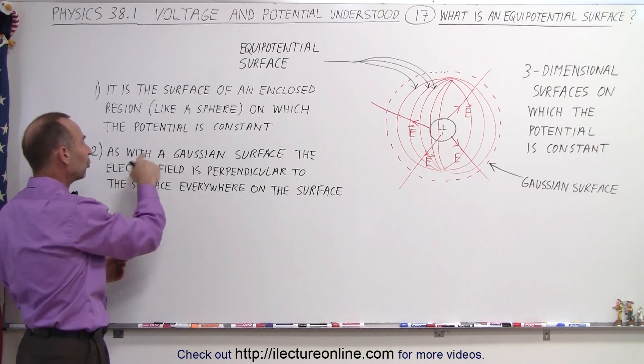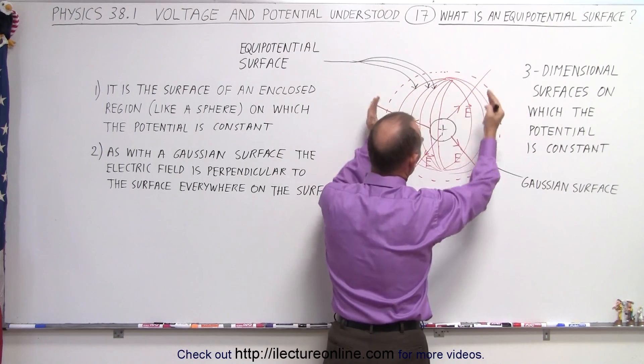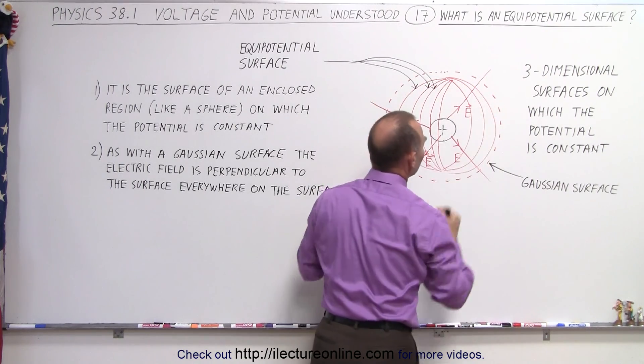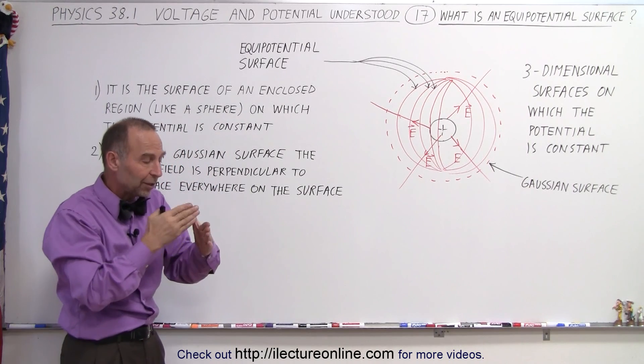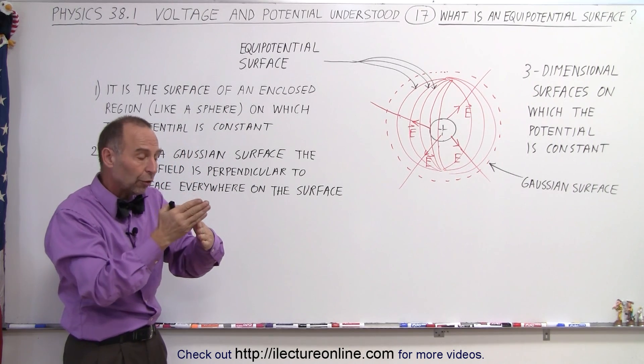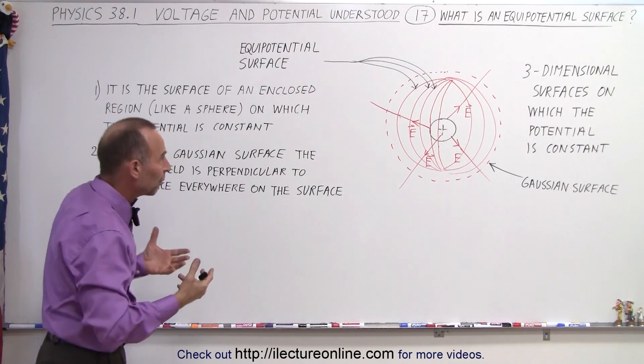Also as with a Gaussian surface, because if you imagine the dotted line to be a Gaussian surface enclosing the charge inside, we know that with a Gaussian surface we draw it in such a way that the electric field is the same everywhere along the surface and it's perpendicular to the surface, which is very similar to what we would consider for an equipotential surface.